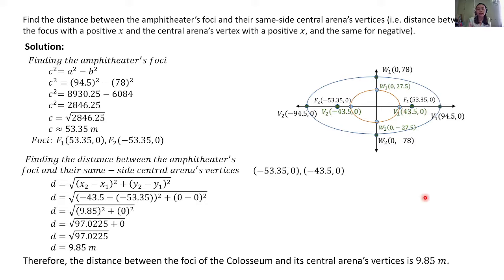Sana clear tayo with the first example. Again, mahalaga na isulat din natin yung conclusion — sasagutin natin yung hinihingi sa atin dun sa problem. Therefore, the distance between the foci of the Colosseum and its Central Arena's vertices is 9.85 meters. Let's now proceed to our second example.